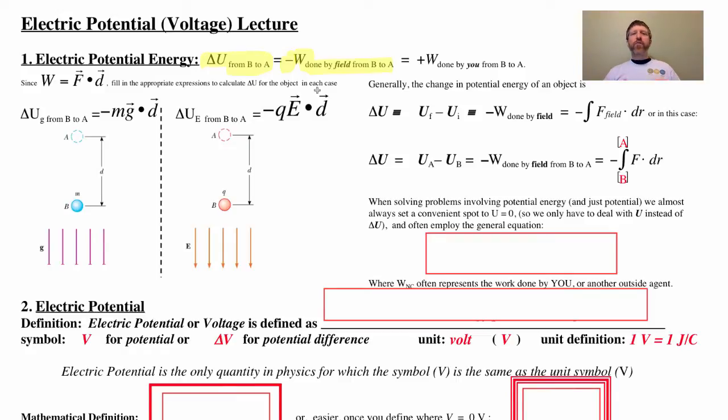If a field does negative work, for example, if I'm lifting this pen up, the gravitational field does negative work, meaning it's got positive potential energy.